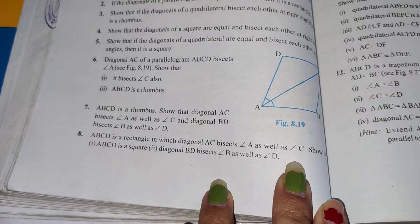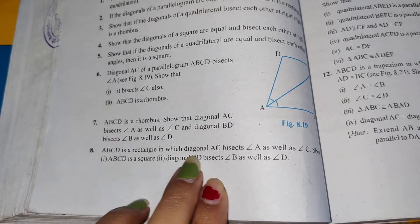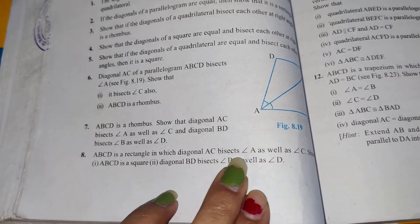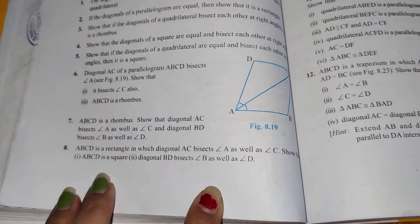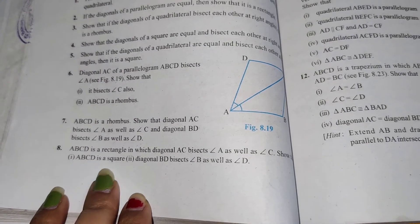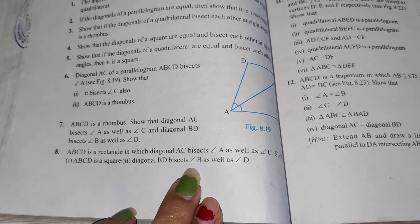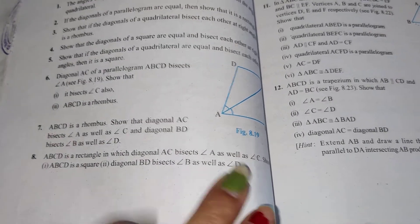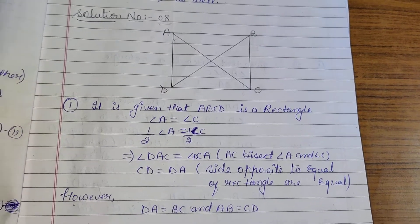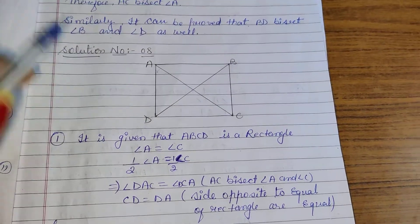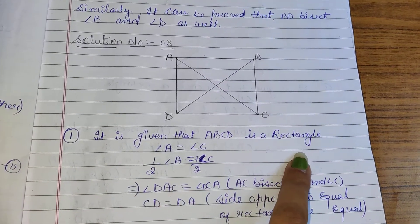Now question number 8. In question number 8, ABCD is a rectangle in which diagonal AC bisects angle A as well as angle C. First, we have to show that ABCD is a square. Then we have to show that diagonal BD bisects angle B as well as angle D. First we draw the diagram. ABCD is a rectangle.